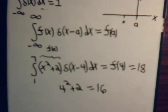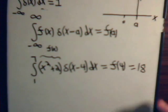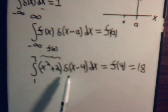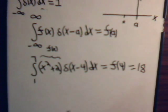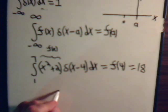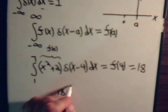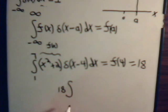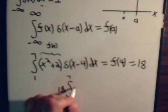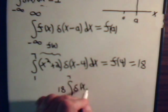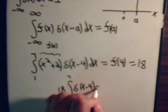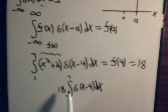We could say it like this if we wanted to. This is always 0, except when x equals 4, giving 18 here. So, we would have 18, the integral. But that's just 1.